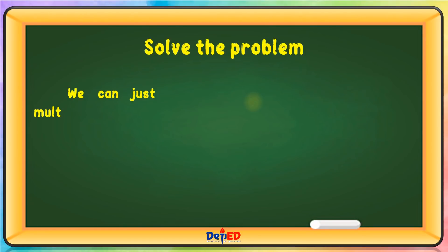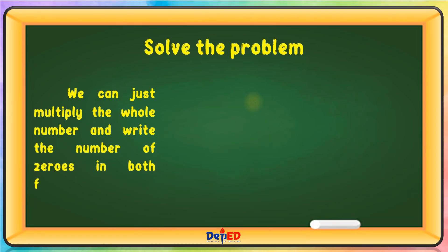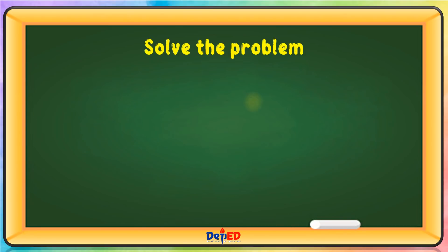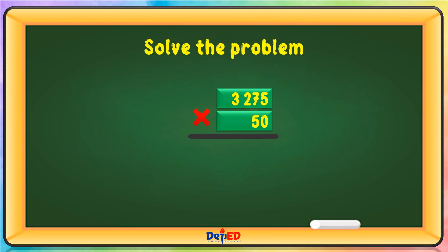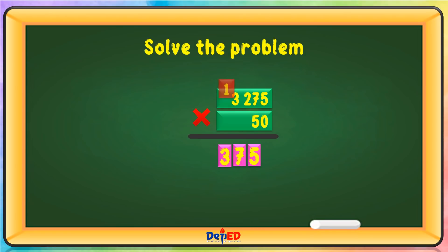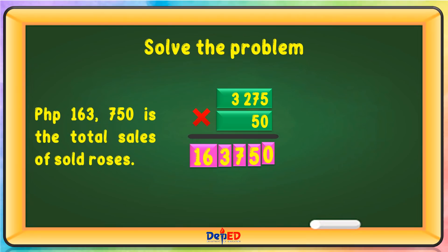You can just multiply the whole number and write the number of zeros in both factors. Multiply only the whole number: 5 times 5 equals 25, carry over 2. 5 times 7 equals 35 plus 2 equals 37, carry over 3. 5 times 2 is 10 plus 3 equals 13, carry over 1. 5 times 3 equals 15 plus 1 equals 16. The product is 163,750. That is the total sales of the sold roses.